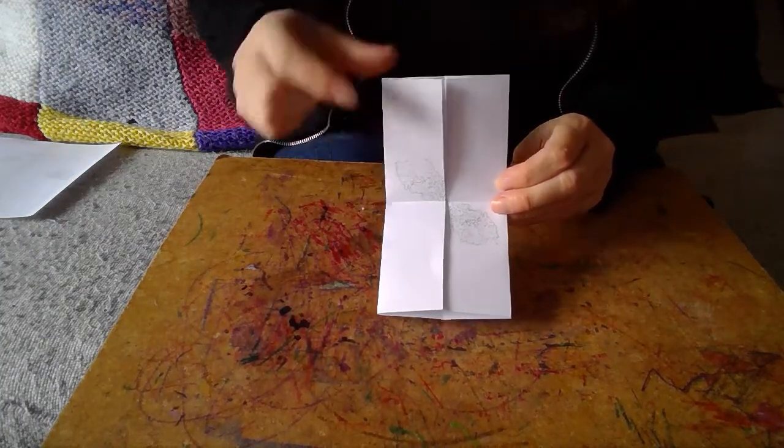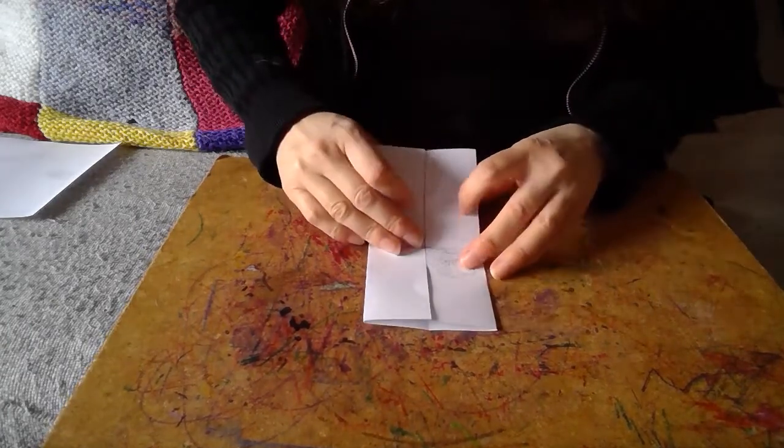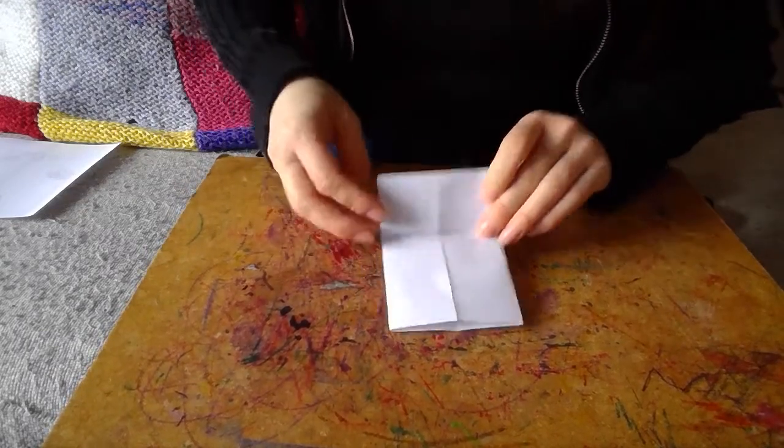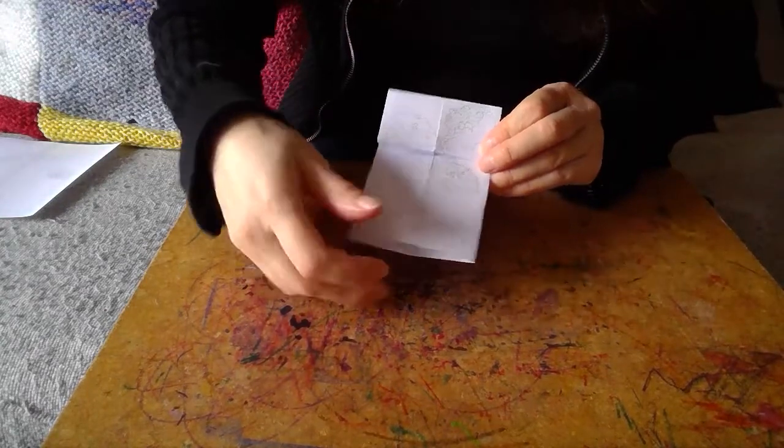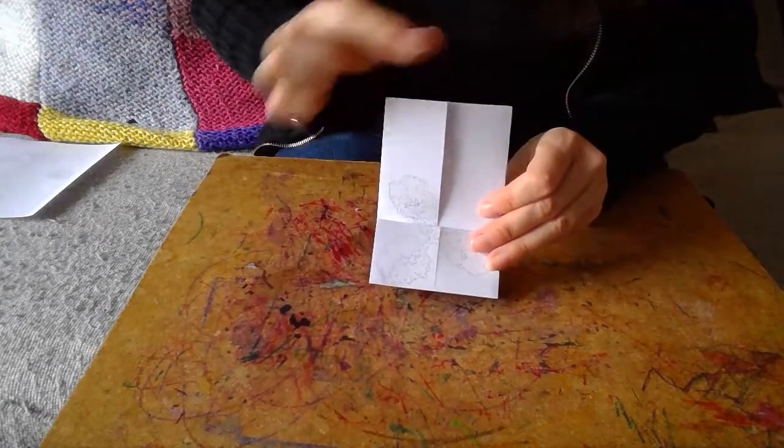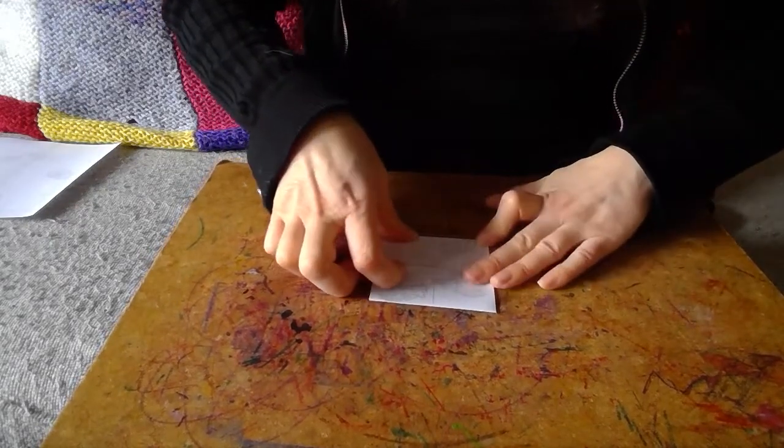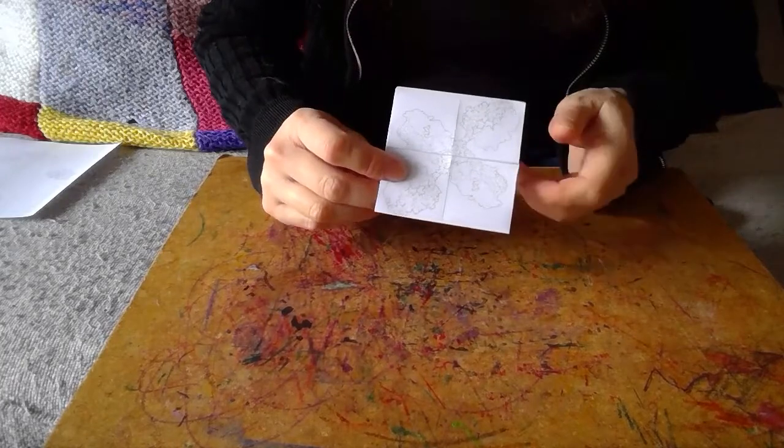Now we're going to take the top and bring it to the middle. So we're going to again fold it in half. We're making this smaller and smaller. There we go. And the bottom, the same thing, bring it to the middle. So you'll end up with what looks like a nice little neat square. Looking like interesting pictures already.